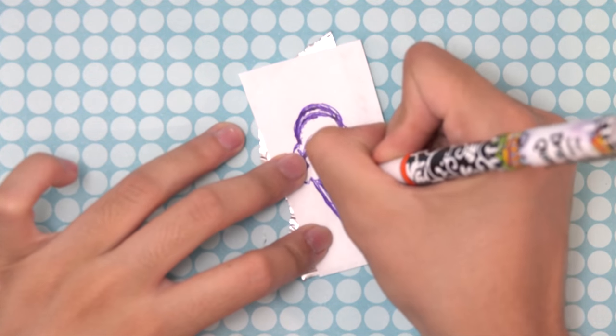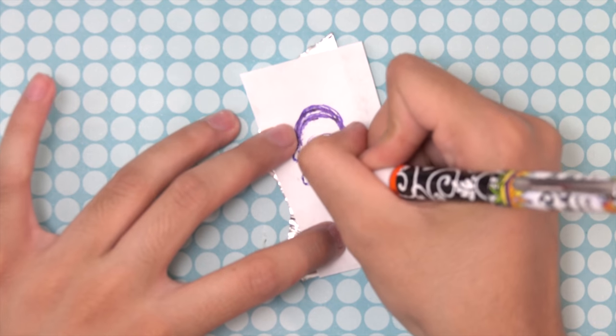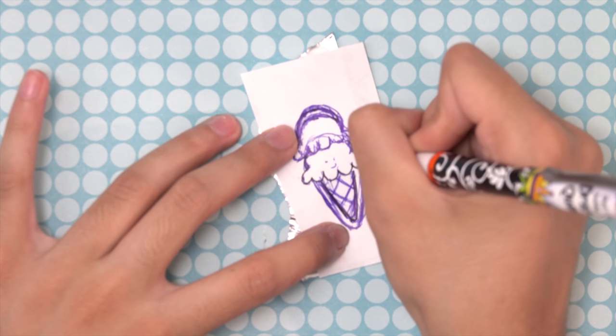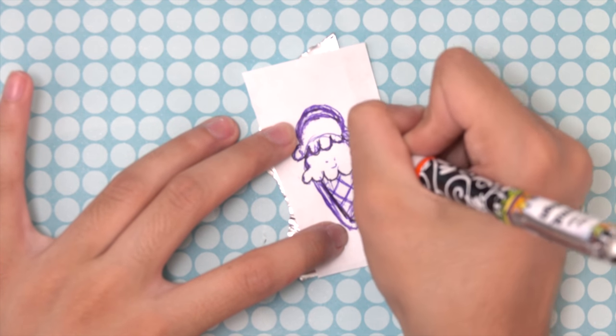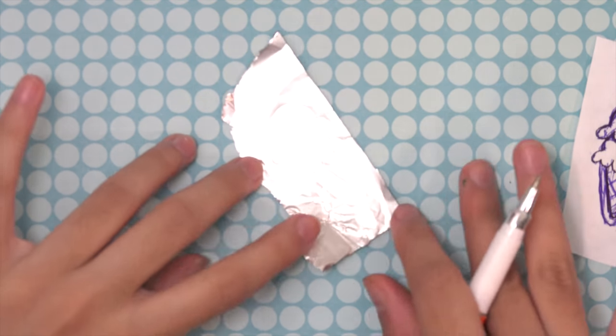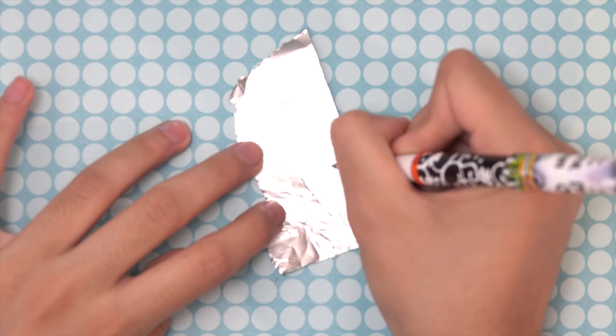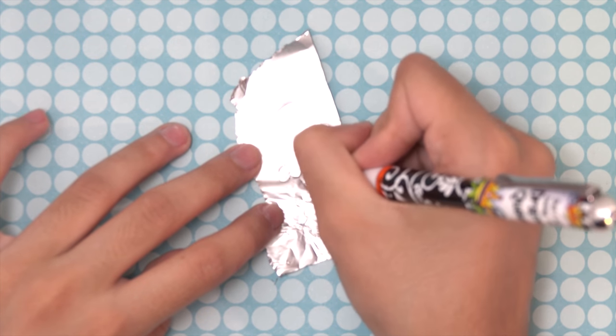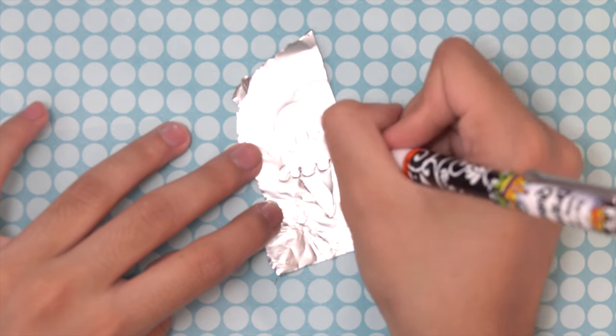I placed it on some tinfoil and I drew over those outlines again. I applied a bit of pressure so I can transfer the design onto the foil. Then I went over those lines to make them more engraved.